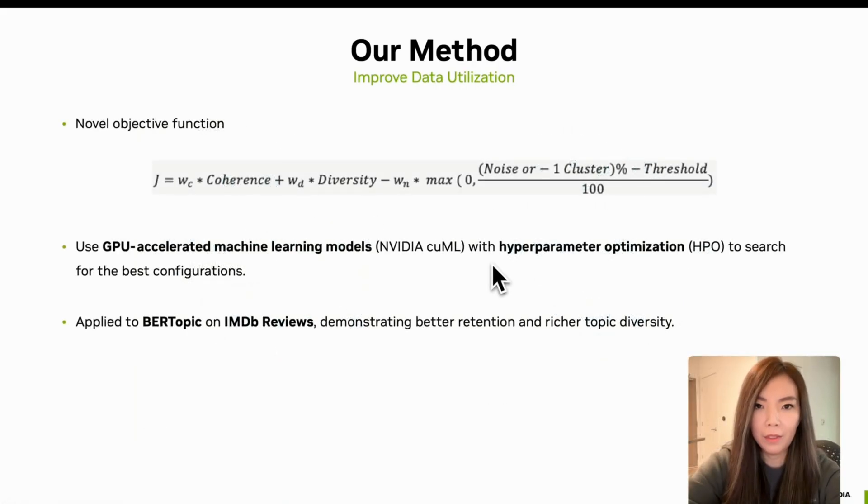And you may wonder how I did it. At its core, our goal is to optimize three key aspects: coherence, diversity, and noise reduction. These are often at odds with each other, so we introduce a novel objective function that balances them using weighted coefficients.